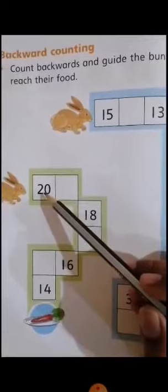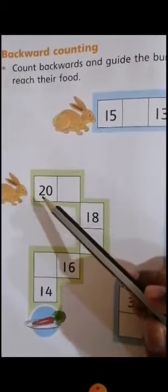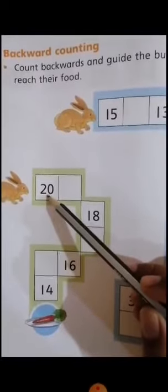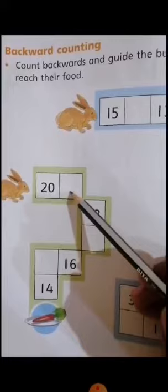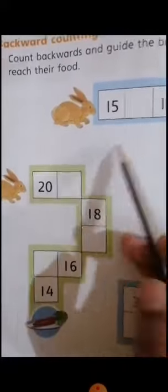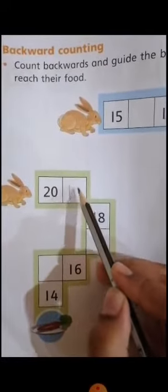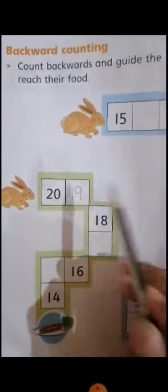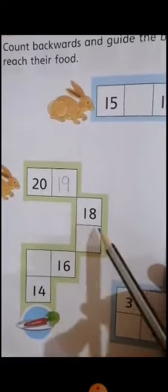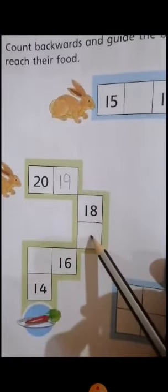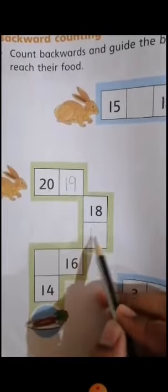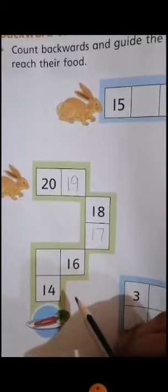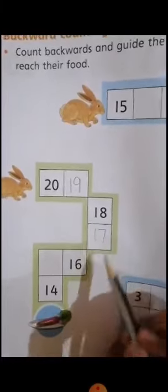Which number is this? 20. This is number 20. When we do backward counting, then which number comes after 20, which we have seen in the video? 19. Yes. You have to write 19 here. Okay. Now 18 and then 17. So you have to write 17 here. How to write 17? 1 and 7.